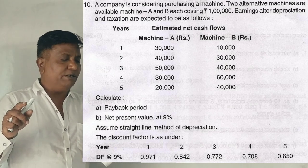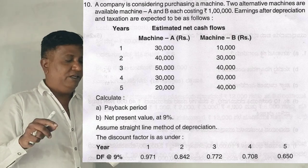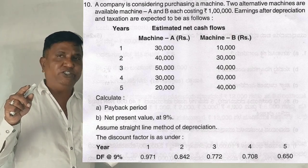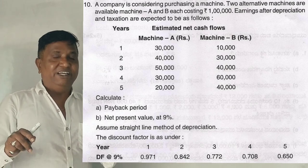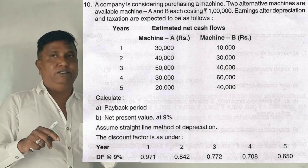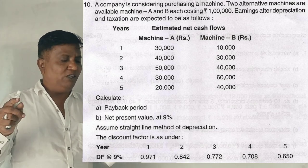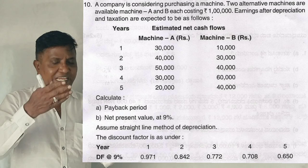Earnings after depreciation and taxation are expected to be as follows. Here, years 1, 2, 3, 4, 5 is given. Estimated net cash flows is given. Net cash inflows is given. So 30, 40, 50, 60 is given.